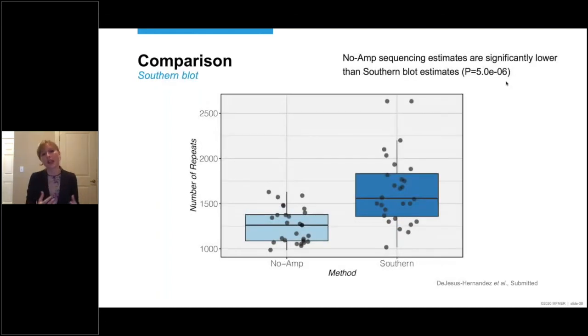This is a different kind of box plot. Again, we're showing the number of repeats, but we're comparing no-amp sequencing to southern blotting directly. And although I just told you that there is a significant correlation between the two, there is also a significant difference. Because in general, the repeat length appears to be smaller when using no-amp sequencing than using southern blotting. And that tells us that maybe there is a bias towards smaller expansions when using no-amp sequencing. So you should be aware of that.